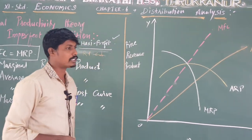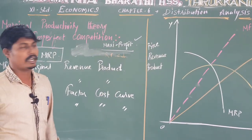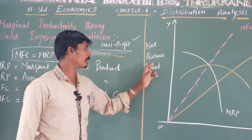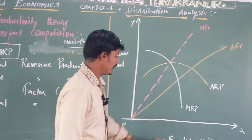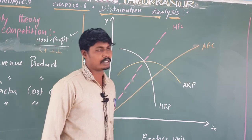O means origin. The Y-axis shows price, revenue, and product. The X-axis shows factor units.